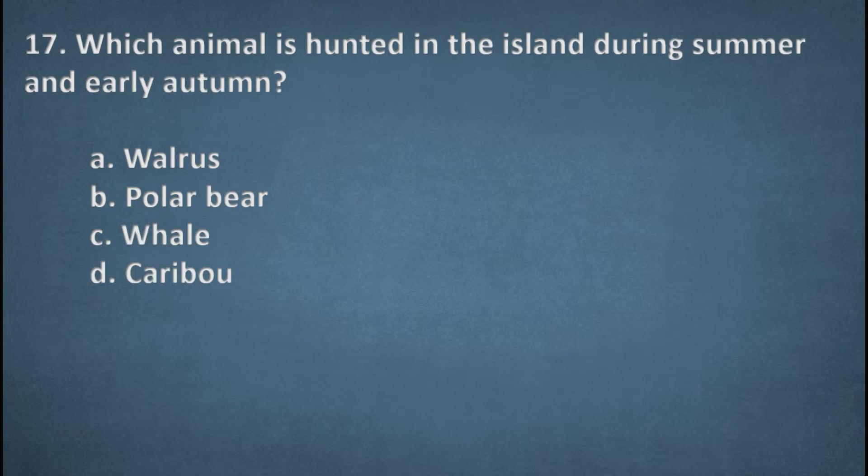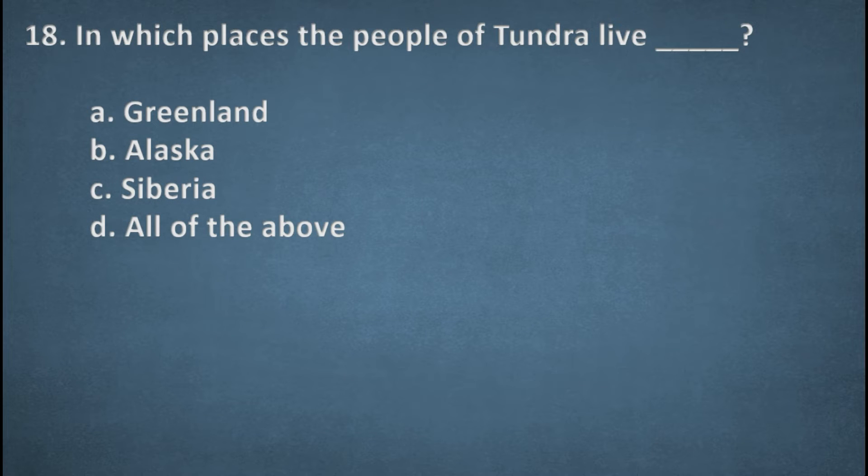Next one. Which animal is hunted in the island during summer and early autumn? Options: Walrus, Polar bear, Whale, Caribou. The right option, D, Caribou. Next one. In which places the people of Tundra live? Options: Greenlands, Alaska, Siberia, All of the above. The right option, All of the above.